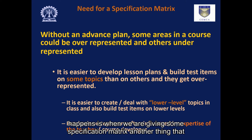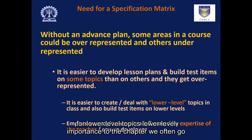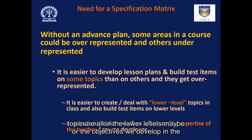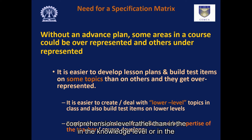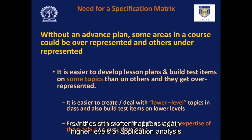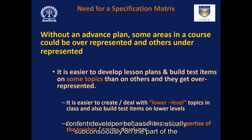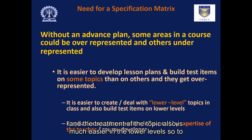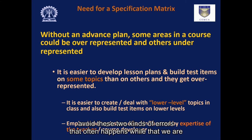Another problem that happens is when we give importance to a chapter, we often go for lower-level topics. The treatment we give and the objectives we develop are all in the lower levels — perhaps at the knowledge or comprehension level — rather than at the higher levels of application, analysis, and synthesis. This often happens subconsciously because it is easier to create instructional objectives and assessment questions at the lower levels, and the treatment of the topic is also much easier there.